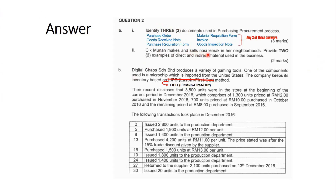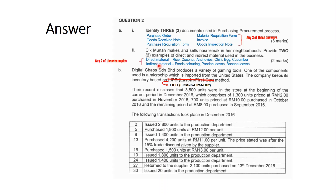Next, Cik Munah makes and sells Nasi Lemak in her neighborhood — provide 2 examples of direct and indirect material used in the business. Direct materials are rice, coconut, anchovies, chili, egg, and cucumber, as these are the main ingredients needed to prepare Nasi Lemak. Indirect materials include food coloring — sometimes you find Nasi Lemak in pink or green color — and pandan leaves, which only add value to the making of Nasi Lemak. You just provide any 2 of these examples since the question requires only 2.